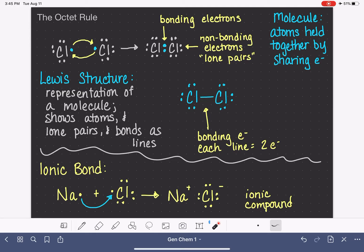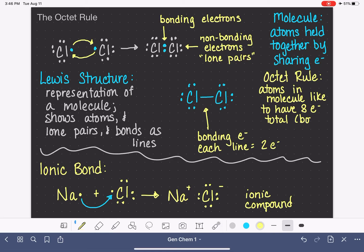So what does all of this have to do with the octet rule? The octet rule, like I said, is a rule that we use to help us predict the structure of a molecule. And the octet rule says that when an atom is in a molecule, it likes to have eight electrons total, either in bonds or lone pairs.